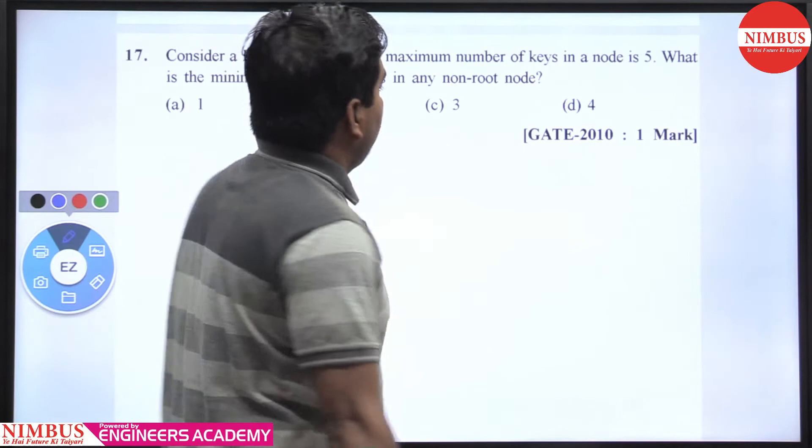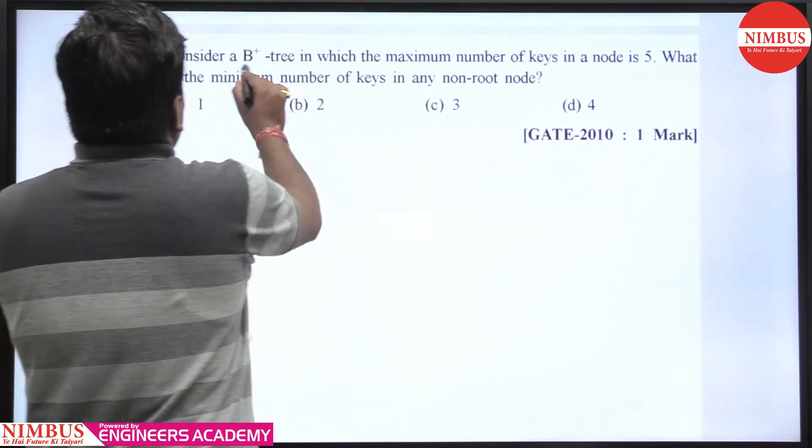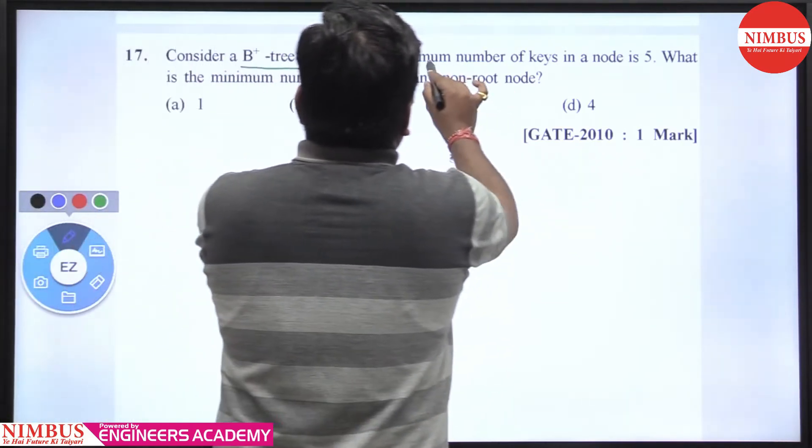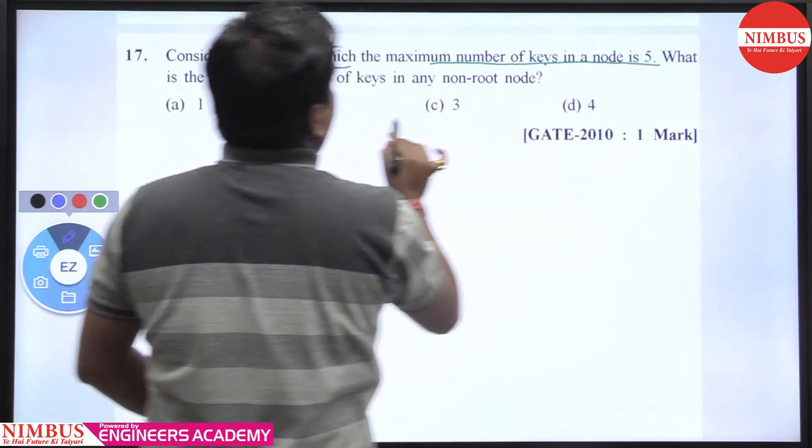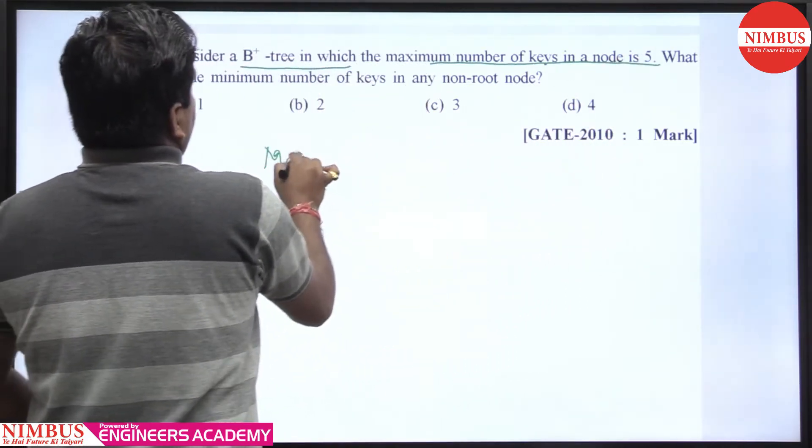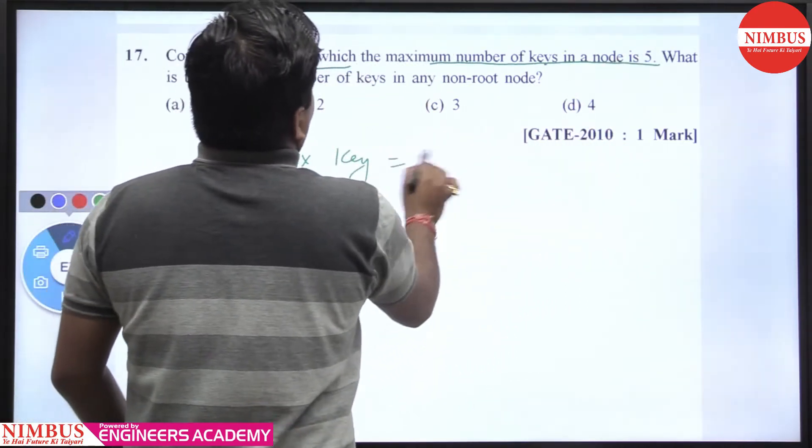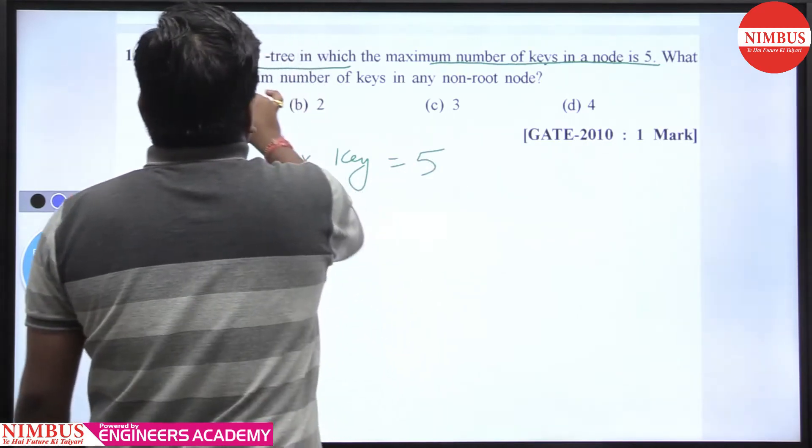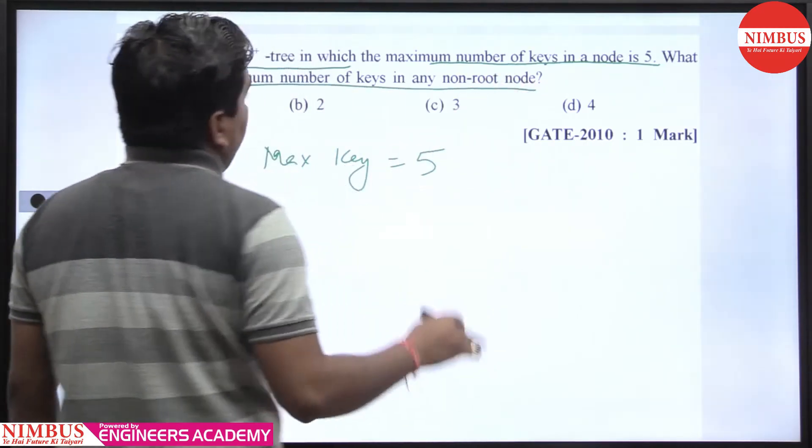Hello students, this is a GATE 2010 1-mark question. Consider a B+ tree in which the maximum number of keys in a node is 5. What is the minimum number of keys in any non-root node?